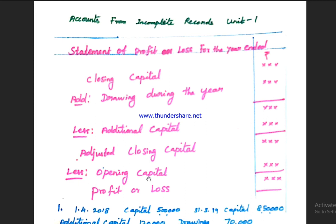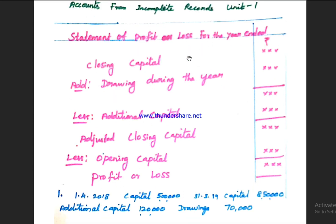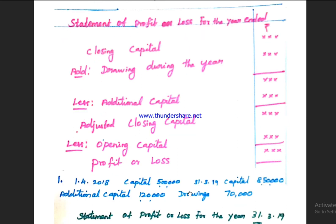The format of the Statement of Profit or Loss is as follows: take the closing capital, add drawings, less additional capital, less opening capital. The resulting figure gives you the profit or loss for the year. This formula is commonly tested for 2-mark and 3-mark questions.